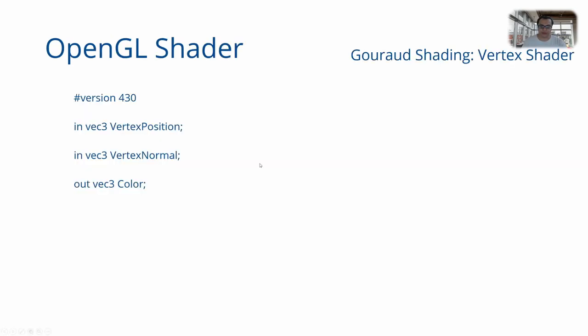Now let us see an example of how Gouraud shading may be implemented in a shader. So here is a vertex shader written in GLSL. We have our standard inputs which has the vertex position and the vertex normal which you can get from a VBO.